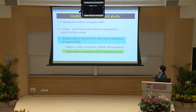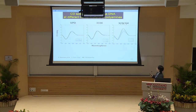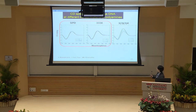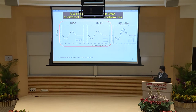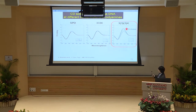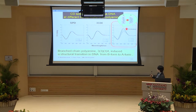Next, I'll give you some data of CD measurement. This is the result of CD measurement at room temperature. For linear-chain polyamine, there seems to be no apparent change in the CD spectra, indicating that the secondary structure retains the B form. On the other hand, for the branched-chain polyamine, a marked increase of the positive CD band at 275 nanometers was observed. It indicates the branched-chain polyamine induced a structural transition in DNA from B form to A-like form.